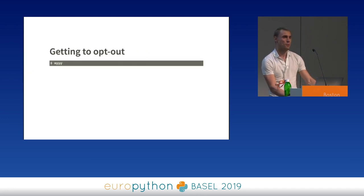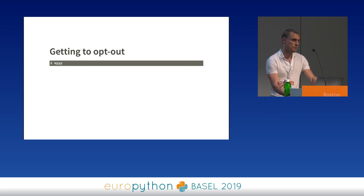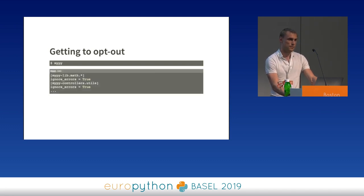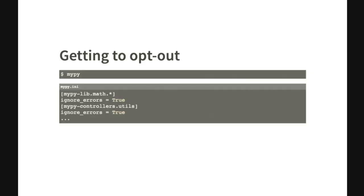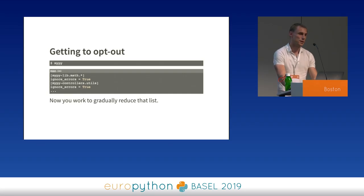At some point when your opt-in list is sufficiently long, you definitely want to switch to opt-out — meaning you run MyPy on everything by default except for some modules that you exclude in your config. There might be dozens of these ignored modules in the beginning, but over time you work to make that list smaller and smaller until it disappears. The benefit of getting to opt-out is that any new modules you add to your project will be checked by default.